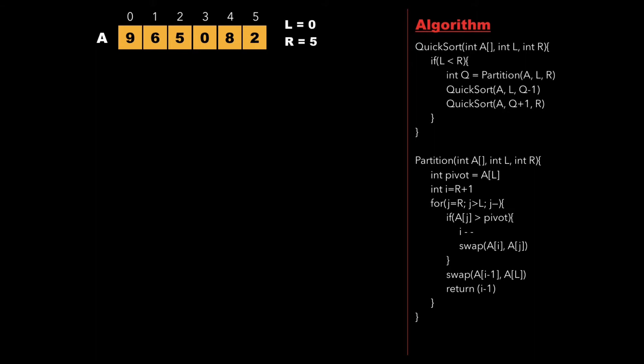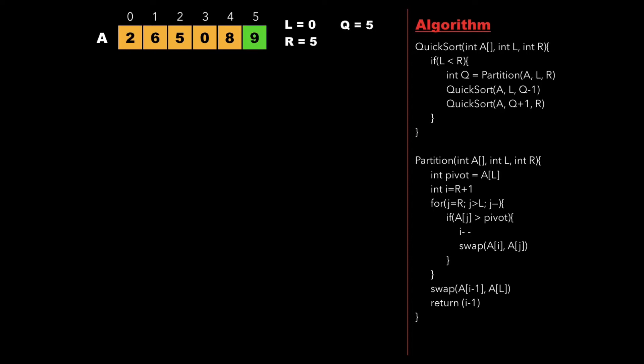In the partition function we initialize pivot as the leftmost element which is 9, and also initialize I to R plus 1. Then we run a for loop for j equal to R down to L, that is from j equal to 5 to 0, and check whether A[j] is greater than pivot. Since 2 is not greater than pivot we decrement j. Now j points to 8. Again 8 is not greater than pivot, so we keep on decrementing j. Now j points to index 0, and since j is not greater than L we exit the for loop and swap A[i-1] with A[L], that is we swap 9 with 2.